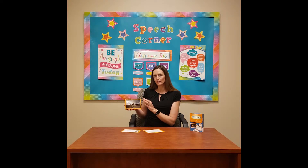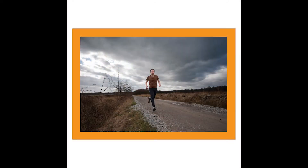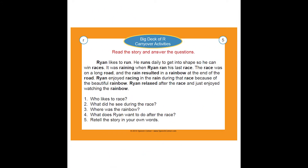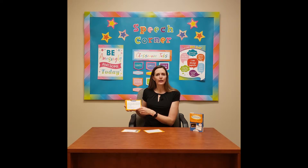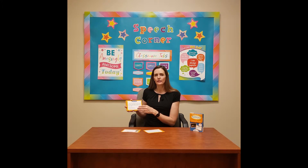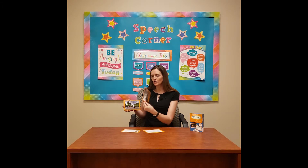The next set of activities has a photograph on one side, and when you flip it over, there's a small paragraph where the target words show up multiple times, followed by five follow-up questions. When you answer those questions, the target words in the paragraph are embedded in the answers, so every time they answer a question you should be hearing their target words show up.